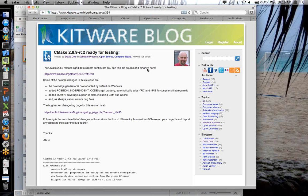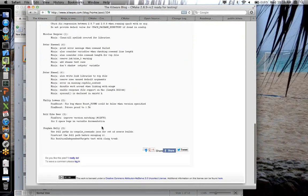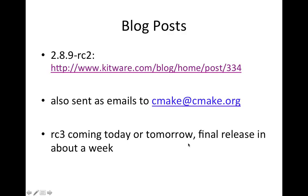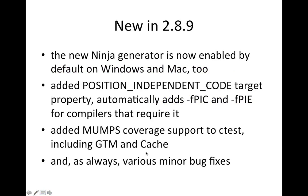We announce all of the release candidates on the Kitware blog, so you can see what's new in each one. If you scroll through the Git log, you see exactly what commits are included in each release candidate. The blog posts are also sent out as emails to the mailing list. The new Ninja generator is now on by default on all platforms, including Windows and Mac, as of release candidate 3, which will be out tomorrow.